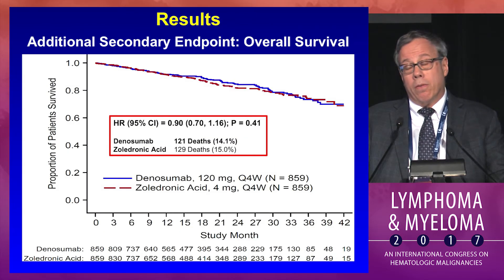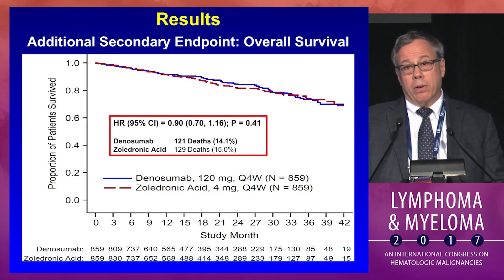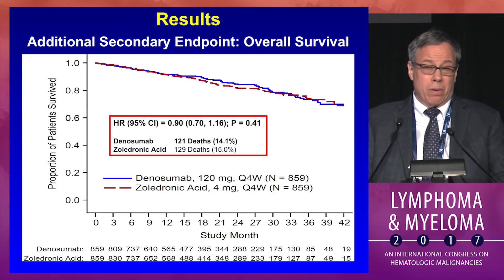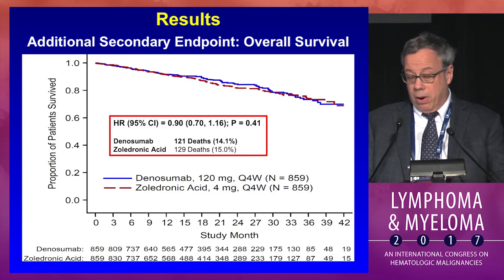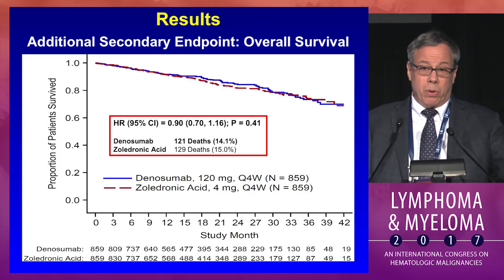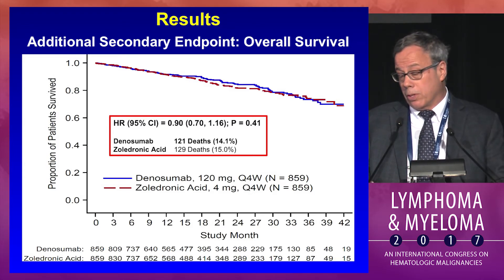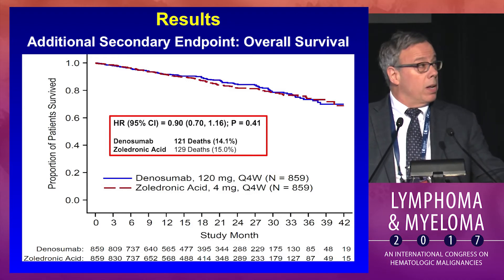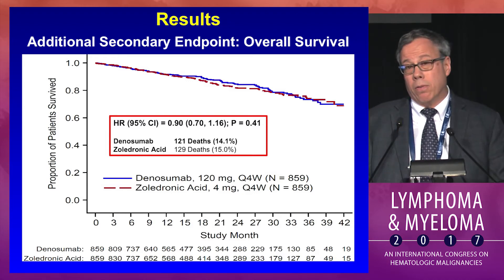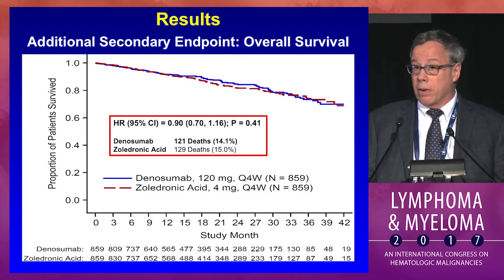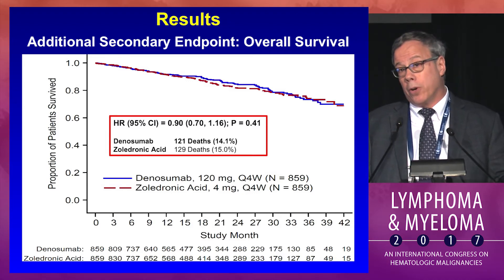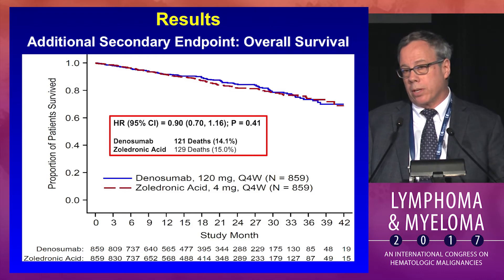Looking at overall survival, there is certainly no difference between the arms. There was an exploratory analysis on progression-free survival, but it is certainly not translating into any overall survival difference — and importantly, there's no inferiority signal, which was the key concern from the Henry trial subset.